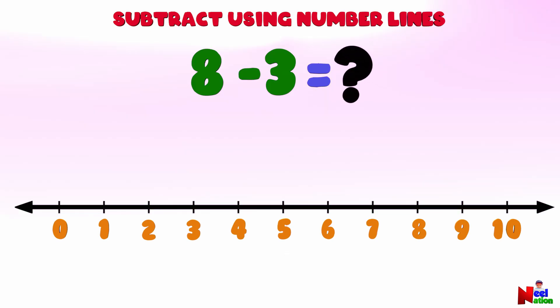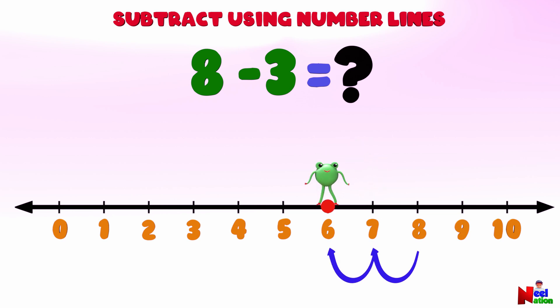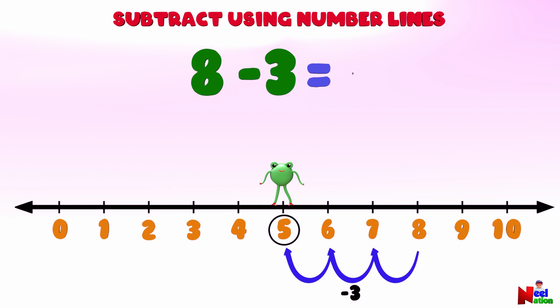Next, what is 8 minus 3? Can you find number 8 on the number line? Now, to take 3 away, starting from number 8, Mr. Lutu will jump three points backwards to the left. 1, 2, 3. Where has he landed? Number 5! 8 minus 3 equals 5. Awesome!